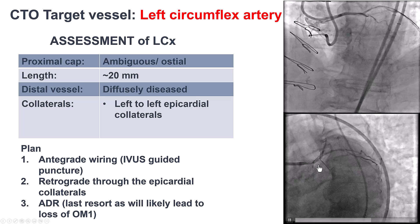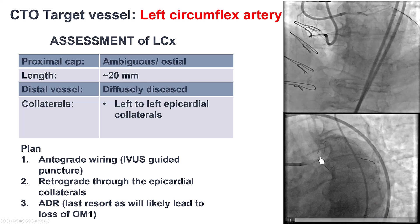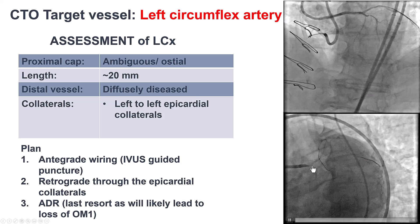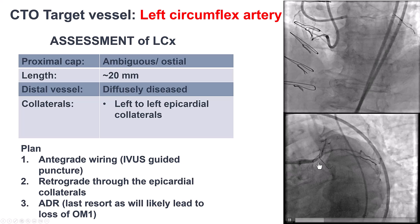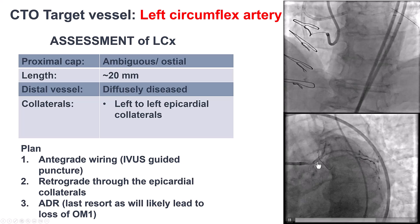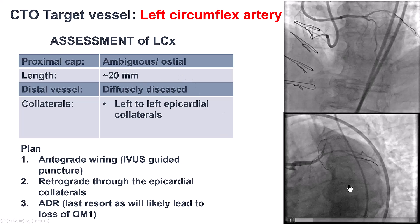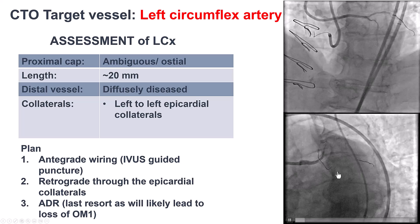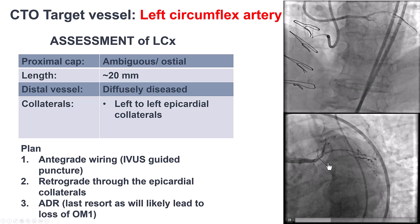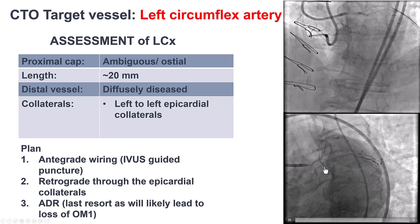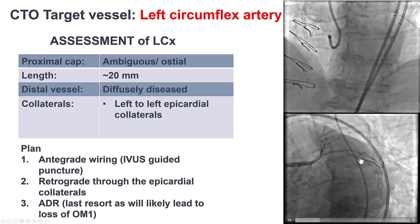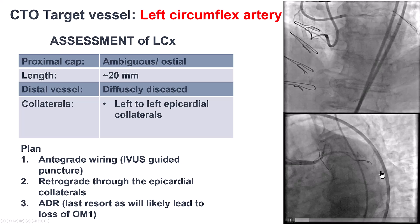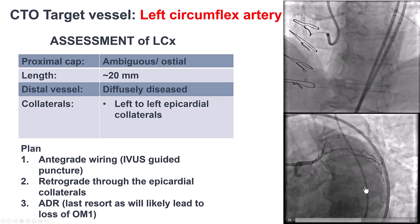Regarding how to approach this lesion: the challenge is that we have the LAD and a large Ramus branch, but we don't understand exactly where the circumflex is starting. So we have an ambiguous proximal cap. The length of the occlusion is relatively short because we have retrograde filling from lateral collaterals. The distal vessel is small and diffusely diseased, and the epicardial collaterals do not seem favorable for the retrograde approach.